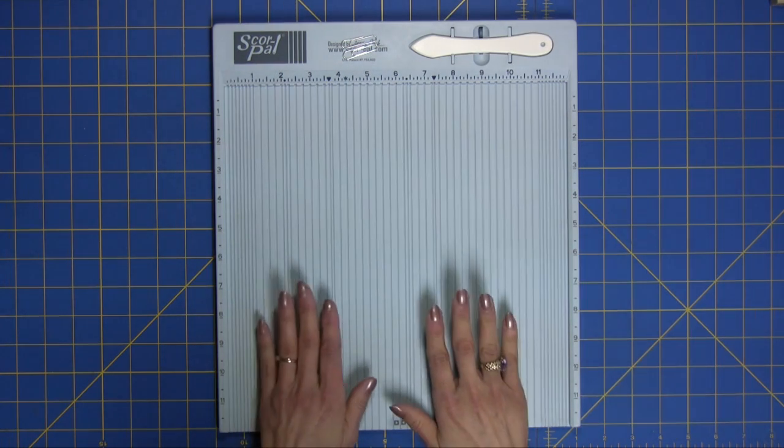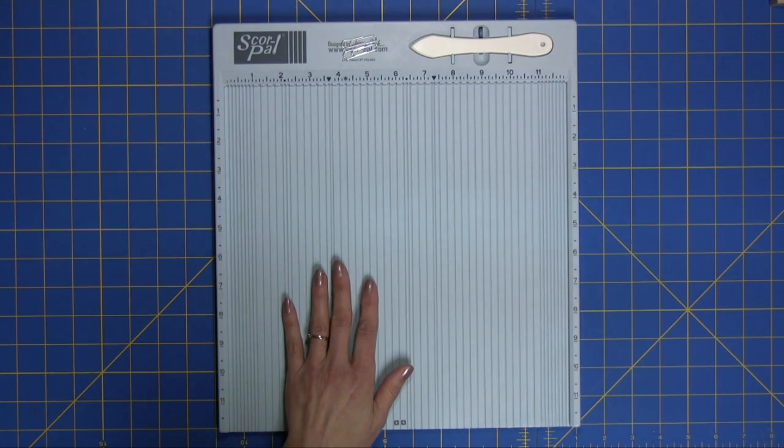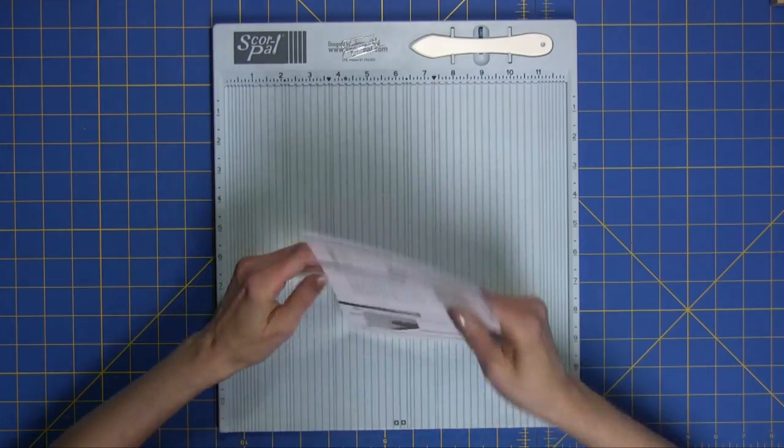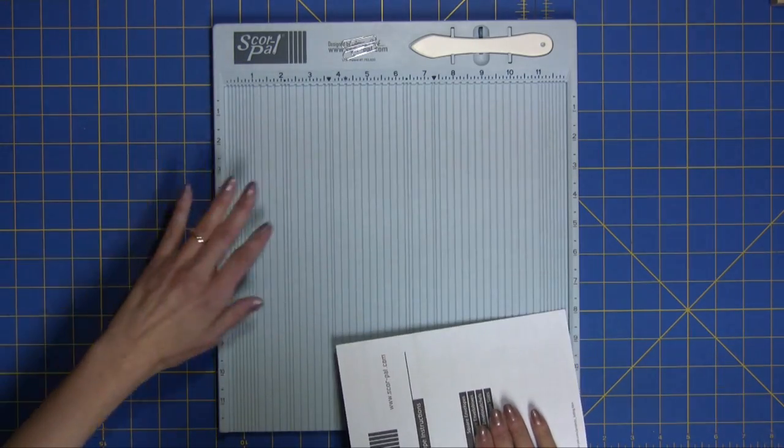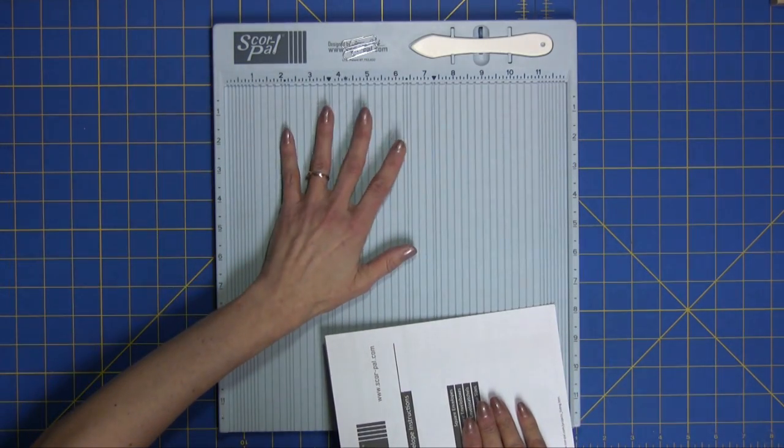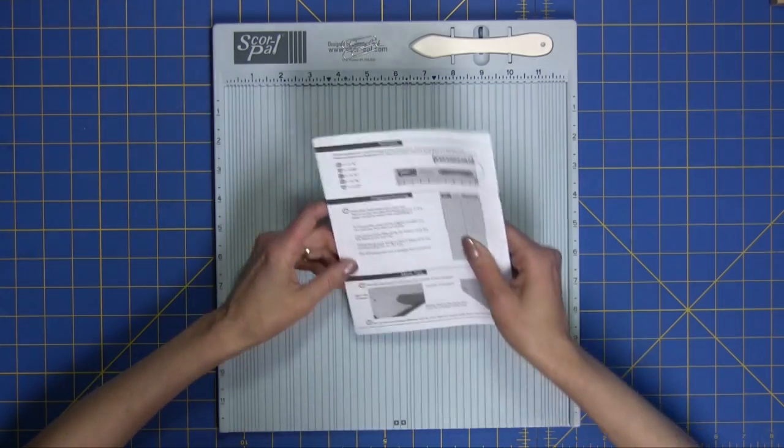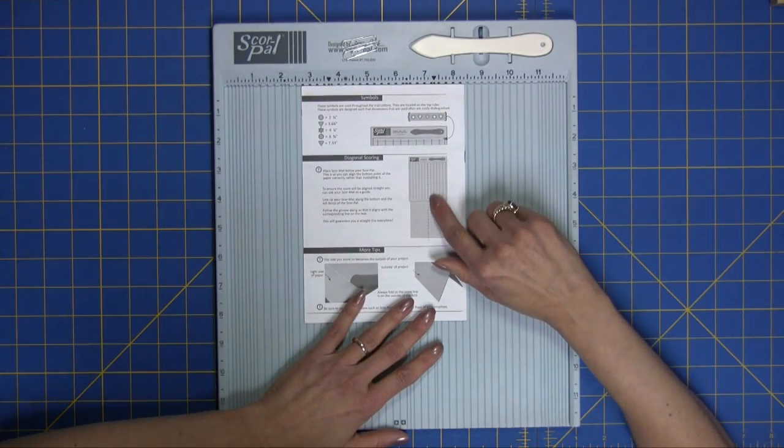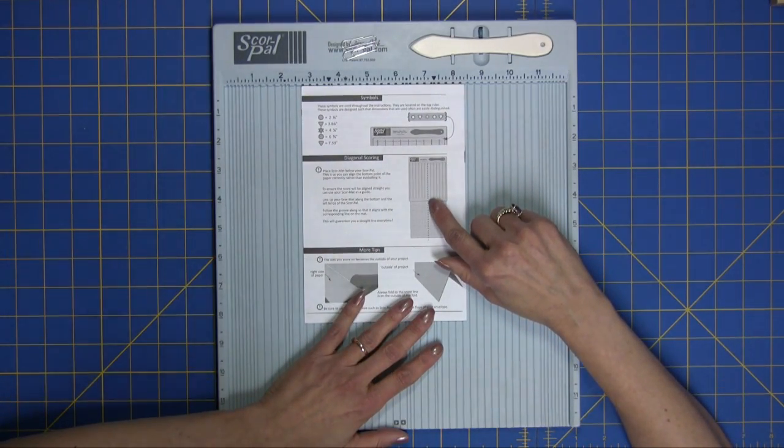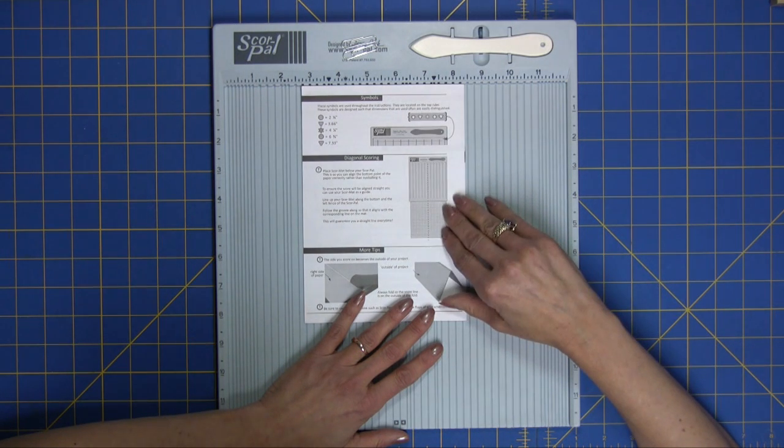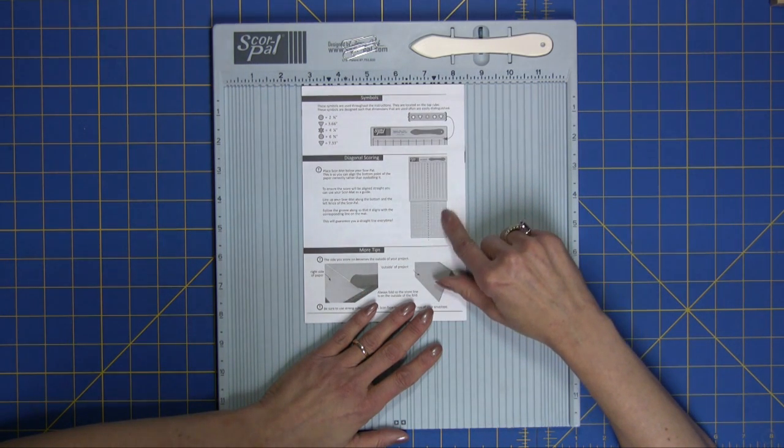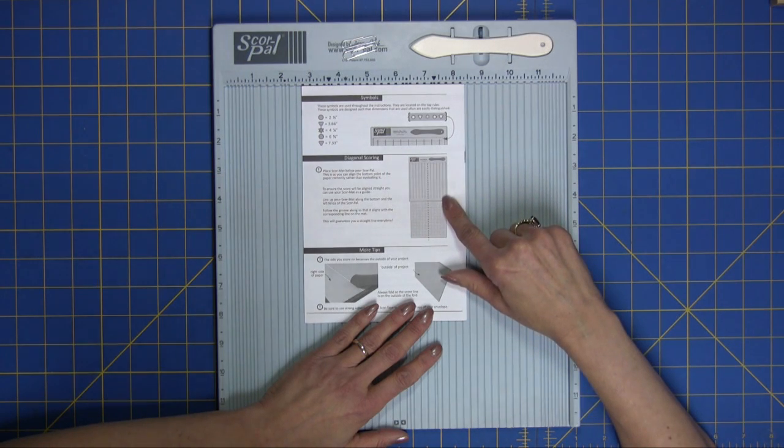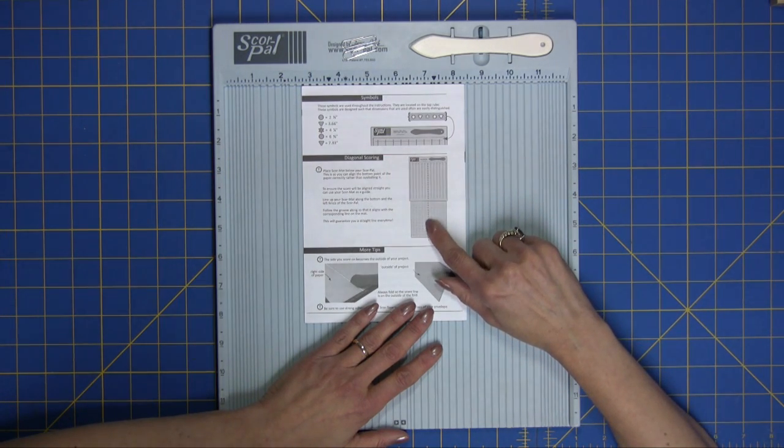The square envelopes are harder to make. And let me just show you what I mean by that. Envelopes that are smaller than a six by six inch square are pretty straightforward. But when you get to making a six by six inch square envelope and a little larger, they're a little bit more complicated. You'll need to have your score mat placed below your ScorePal and then line it up down here.